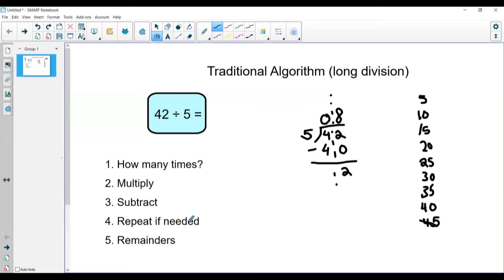I'm going to think, do I need to repeat? So let's see, can 5 go into 2? 5 is larger than 2, so I don't need to repeat. This means that I have 2 left over, 2 remainders. So I'm going to write down that my answer for 42 divided by 5 is equal to 8 with 2 remainders.